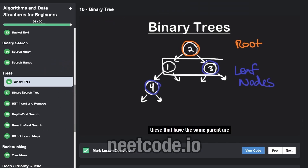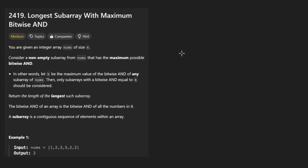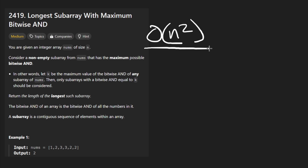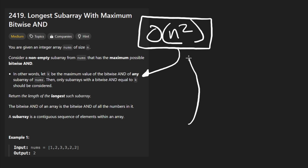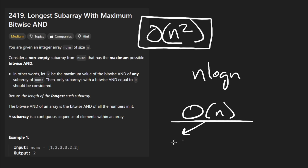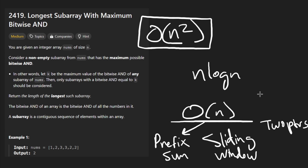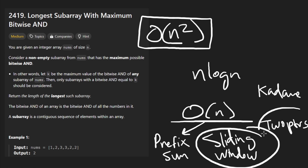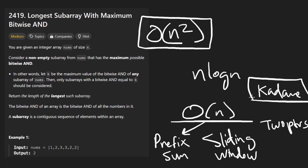Hey everyone, welcome back. Today let's solve the problem: Longest Subarray with Maximum Bitwise AND. Immediately from looking at the problem, we're finding the longest subarray. Generally there are n-squared subarrays in an array, so the brute force is n-squared. Before I even know exactly what the question is asking, I'm thinking how can we improve this — get it down to n log n, or perhaps linear time. There are several linear-time algorithms: prefix sums, sliding window, two pointers, and Kadane's algorithm — which deals with subarrays the same way. This is practically Kadane's problem.